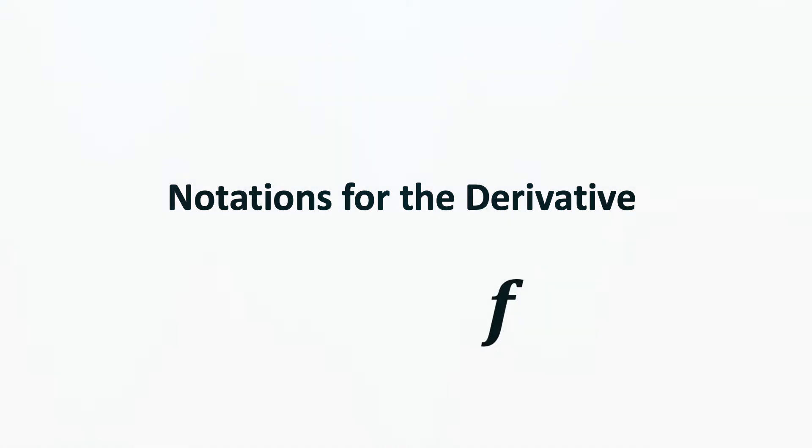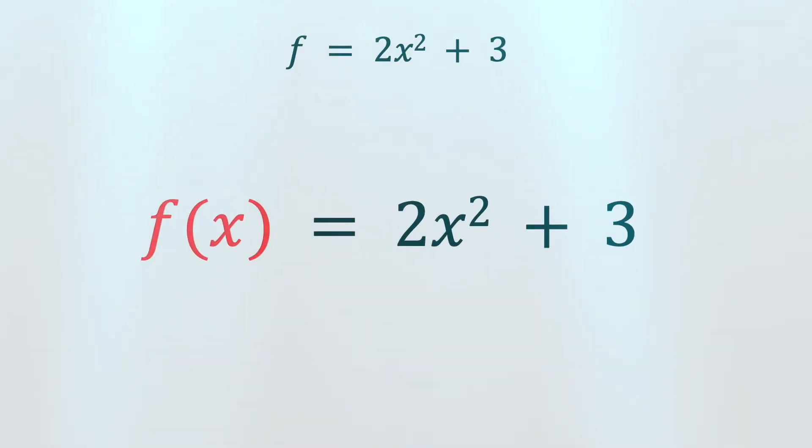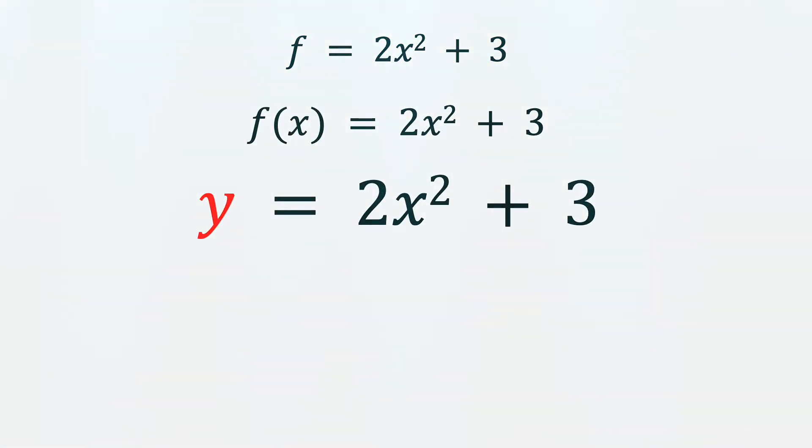It's better to use the letter f for a function. For example, f = 2x² + 3 is a function. We could also write f(x) = 2x² + 3, showing f as a function of the independent variable x. How about y = 2x² + 3? Writing y for f(x) identifies y as the dependent variable.